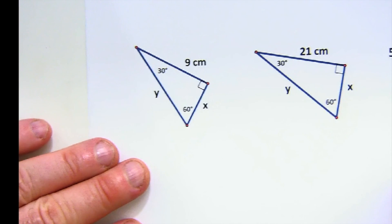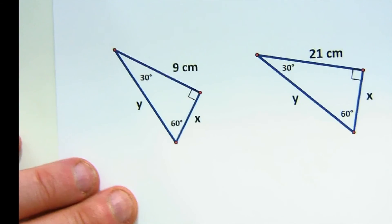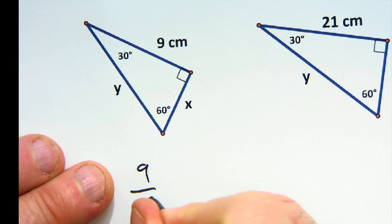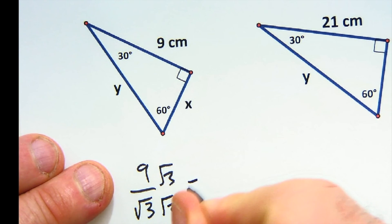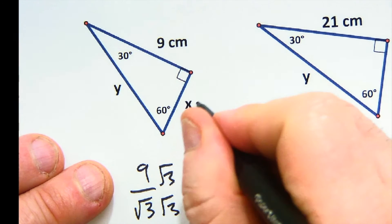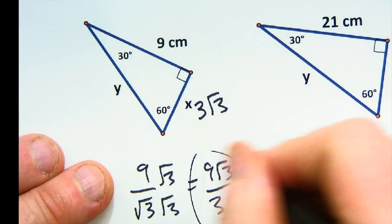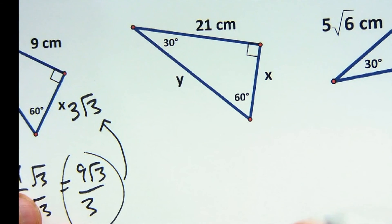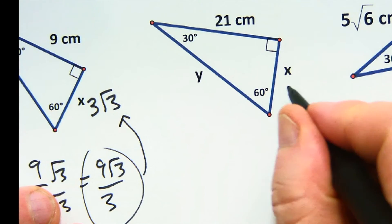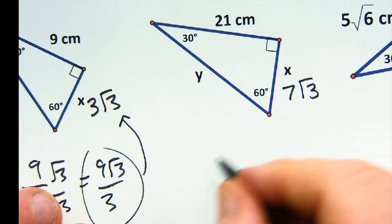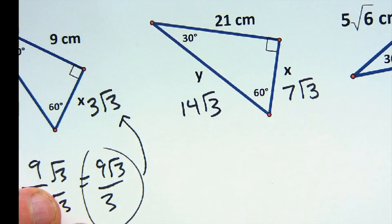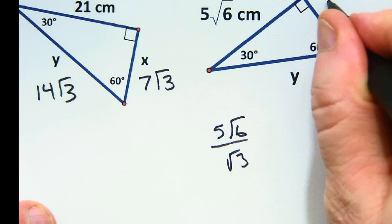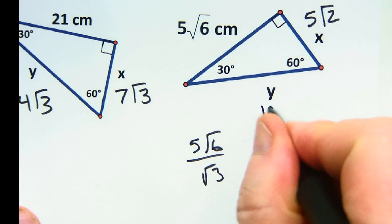When we don't have a √3 on the long leg, we divide by √3 by multiplying top and bottom by √3. For example, 9 divided by √3: multiply top and bottom by √3 to get 9√3 over 3, which simplifies to 3√3. Doubling gives 6√3. Using the shortcut: it's divide by 3 then add √3. So 7 divided like this gives 7√3 over 3, and doubling gives 14√3 over 3. And 5√6 divided by √3 gives 5√2, with double being 10√2.